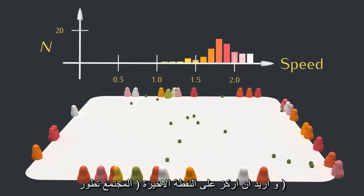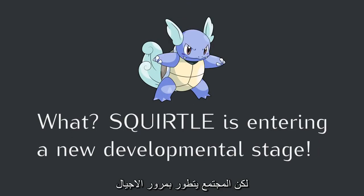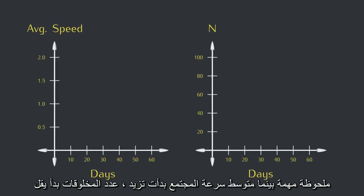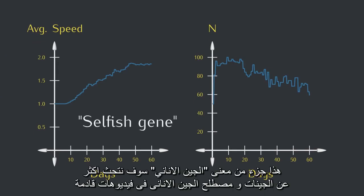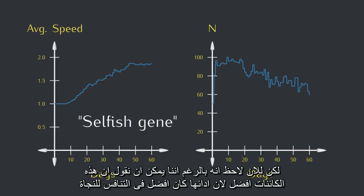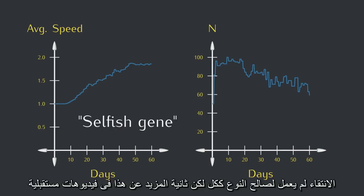And I want to double down on that last point: the population evolved. As much as we all love Pokémon, individuals don't evolve in the biological sense of the word. Populations evolve over generations. One interesting thing to notice is that as the average speed of the population went up, the number of creatures in any given day tended to go down. The creatures now compete more fiercely and are less efficient overall. This is part of the meaning of the term selfish gene. Selection didn't happen for the good of the species as a whole — but more on that in future videos.